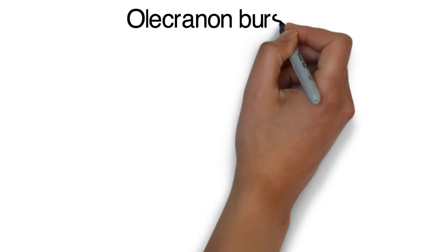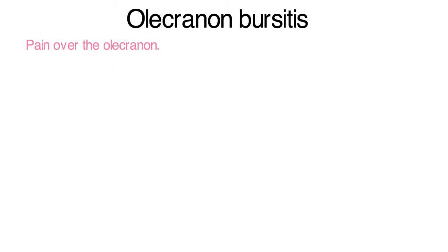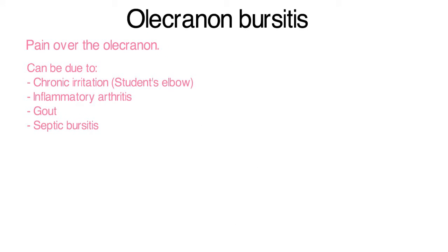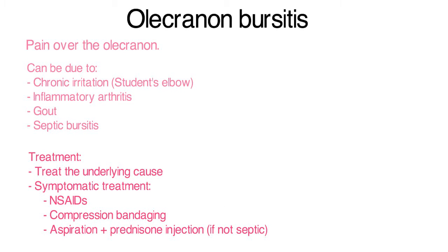Olecranon bursitis can be due to chronic irritation such as in student's elbow, inflammatory arthritis, gout and septic bursitis. Treatment includes treating the underlying cause and symptomatic treatment.